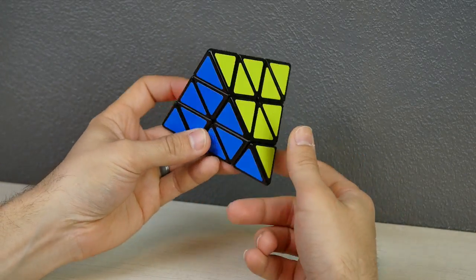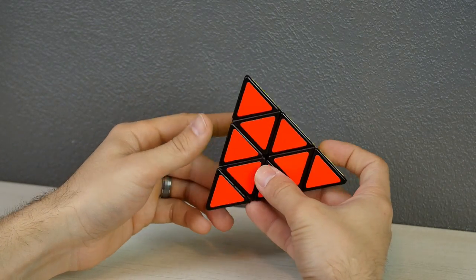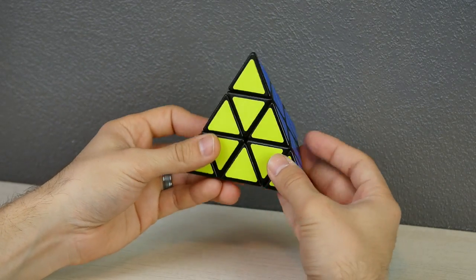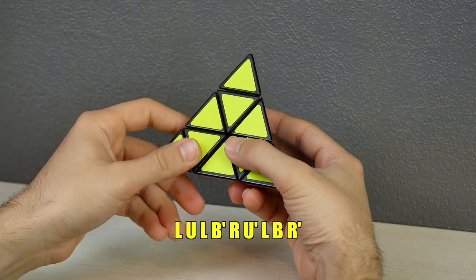First, make sure that the puzzle is completely solved. If you need help solving your Pyraminx, I'll have a link to my tutorial in the video description. Now go ahead and have any color facing you and then do this move: left, up, left, back prime, right, up prime, left, back, and then right prime.